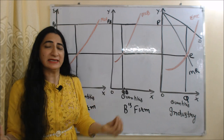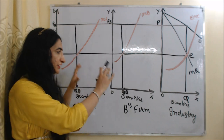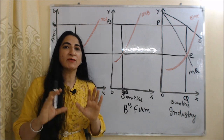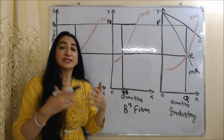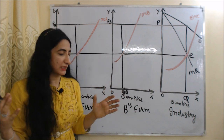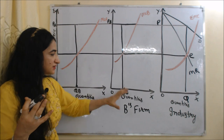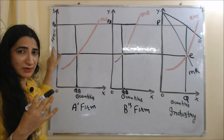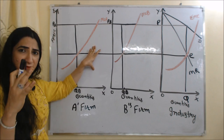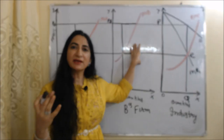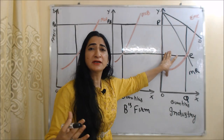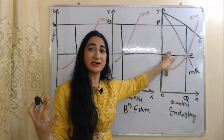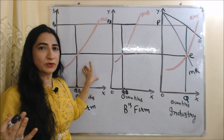Now we will clearly understand joint profit maximization cartel with the help of this diagram. For the sake of simplicity, here we assume we have only two firms — Firm A and Firm B — which are working under collusive oligopoly. Here we have three diagrams. On the x-axis of each diagram we have quantities, and on the y-axis we have price, revenue, and cost. The first diagram represents Firm A, the second represents Firm B, and the third diagram will represent our industry — or we can say the decision of the centralized cartel board regarding price and output of these firms.